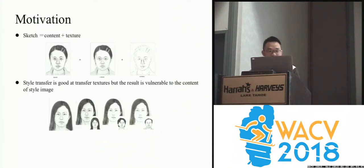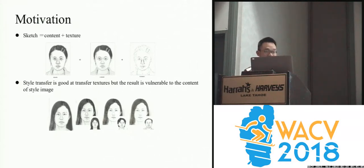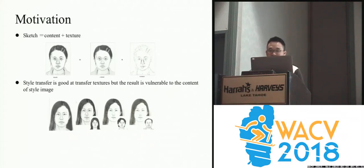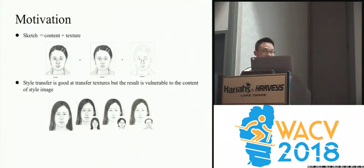So we propose to transfer the shadows to the content image using a neural style transfer approach. However, if we directly apply neural style transfer, the results will be influenced by the content of the reference style image. For example, if we use a style image very similar to the original photo content, the synthesized sketches will be much better than when the reference sketch is not similar to the photo. You can see that if the reference sketch is a man with less hair than the photo we want to transfer, the result will be over-exposed.